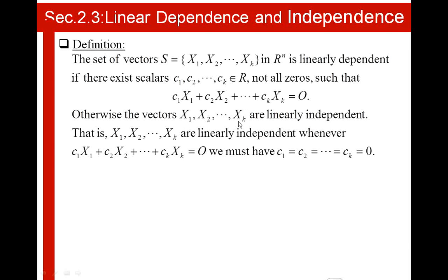Geometrically speaking, vectors are linearly dependent if their line of action is the same. They could be in different sense or different direction, but the line of action is the same. Vectors are linearly independent from the geometry point of view if each is going into a different direction; in other words, they don't have the same line of action.